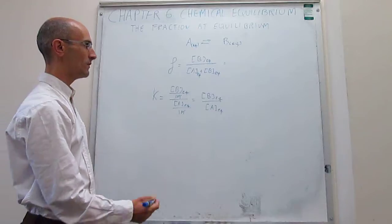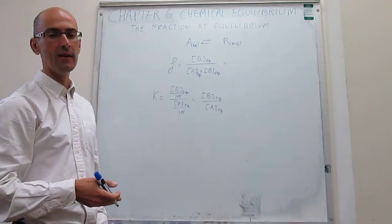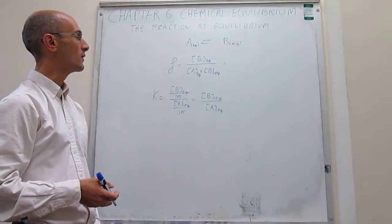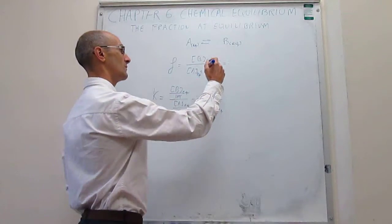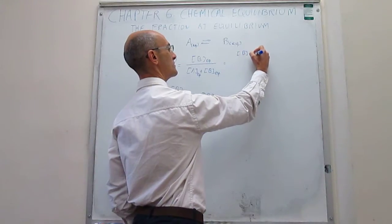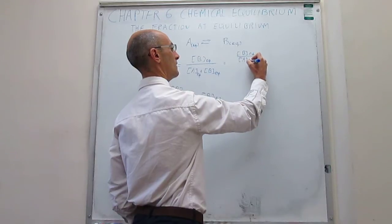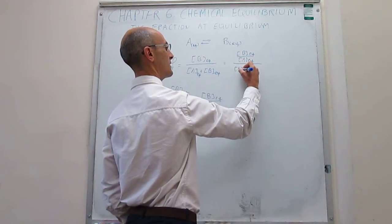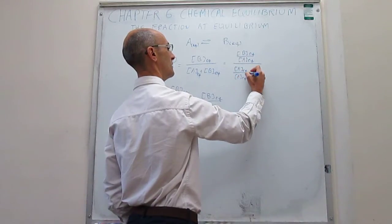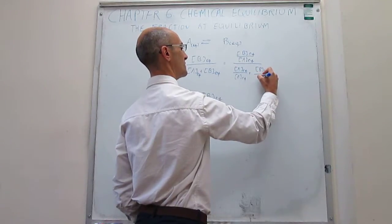So if I divide both the numerator and the denominator by the concentration of A, I'm going to be able to incorporate the equilibrium constant. Dividing through by the molar concentration of reagent, we find: [B] at equilibrium over [A] at equilibrium, divided by [A] at equilibrium over [A] at equilibrium plus [B] at equilibrium over [A] at equilibrium.